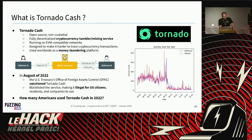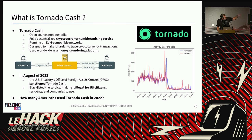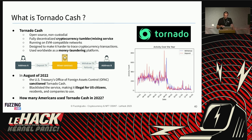Looking at Tornado Cash activity over time, there's a huge spike and then nothing — that specific date is August 2022, when OFAC sanctioned Tornado Cash. A lot of people were sending Tornado Cash funds to public personalities like Bézos, Bored Ape holders, and others to make them appear complicit. That caused the spike. After the sanctions, usage started to slow down significantly.